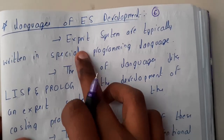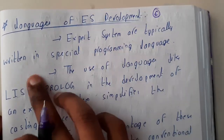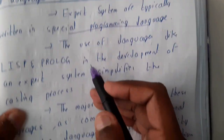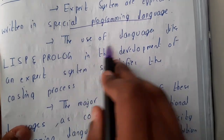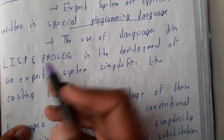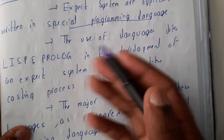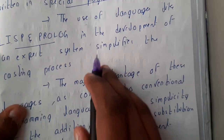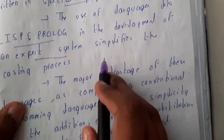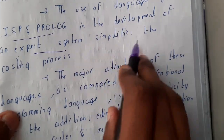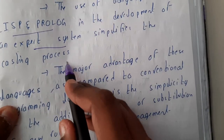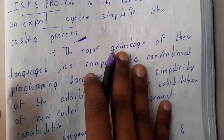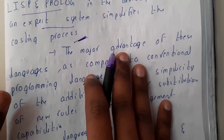Let us go through the theoretical explanation. Expert systems are typically written in a special programming language. The use of programs like LISP and PROLOG in the development of expert systems simplifies the coding process. These languages are the best for expert systems.